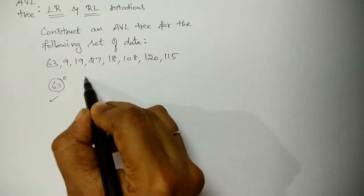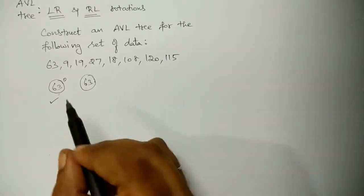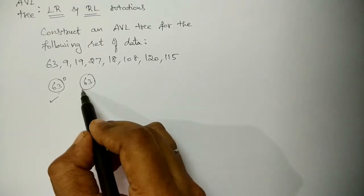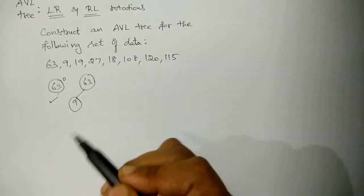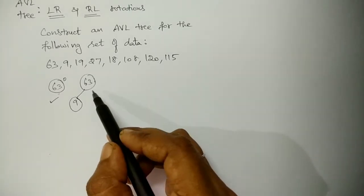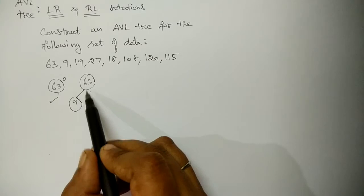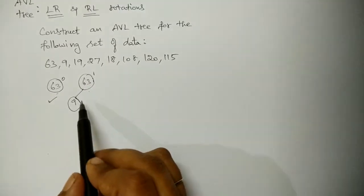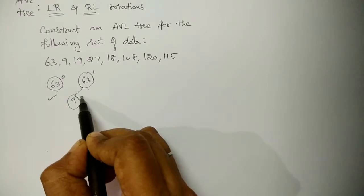Now I want to insert the next data once the tree is made balanced. 9 is compared with the root node, it is less than root, so it is inserted to the left side of 63. Now calculate the balance factor of all the nodes in the tree. The balance factor of 63 is 1 minus 0, so it is 1. The balance factor of 9 is 0 since it is a leaf node. So the tree now is balanced.